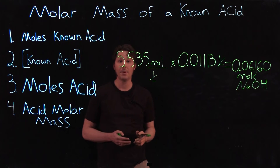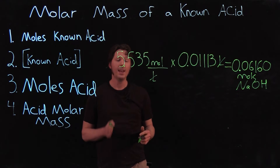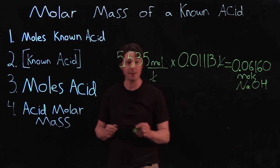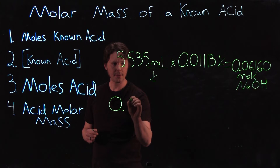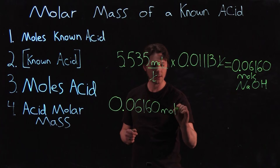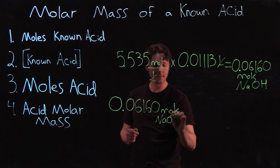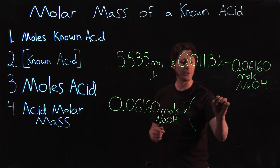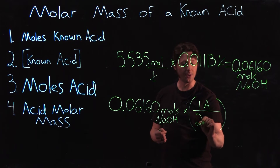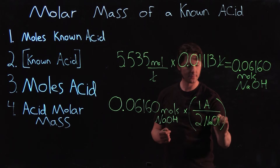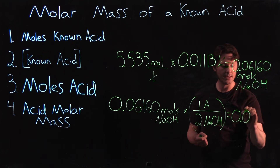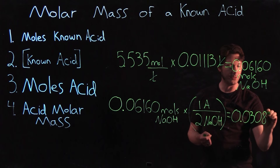We then use the reaction stoichiometry between sodium hydroxide and the known acid to calculate the moles of acid. If the known acid reacted in a 1-to-2 ratio — and be careful here, because this is just an example; the one you actually used in lab could be different — the calculation would be: 0.06160 moles NaOH times the stoichiometry of 1 mole acid over 2 moles NaOH gives us 0.03080 moles of known acid.